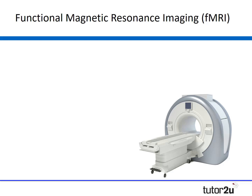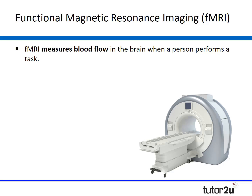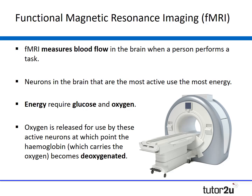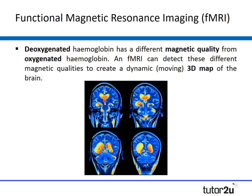The first method we'll look at is functional magnetic resonance imaging, or fMRI. fMRI is a brain scanning technique that measures blood flow in the brain when a person performs a particular task. It works on the assumption that the most active neurons use the most energy, requiring glucose and oxygen. Oxygen is carried in the bloodstream attached to haemoglobin in red blood cells and is released for use by active neurons, at which point the haemoglobin becomes deoxygenated. Deoxygenated haemoglobin has a different magnetic quality from oxygenated haemoglobin, and an fMRI scanner can detect these different magnetic qualities to create a dynamic 3D map of the brain.